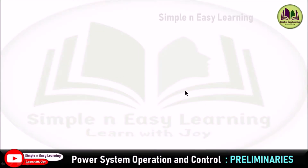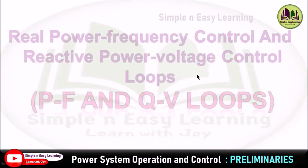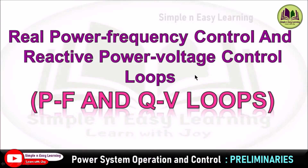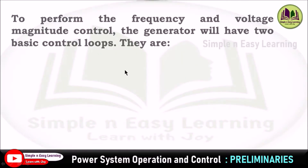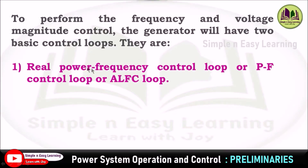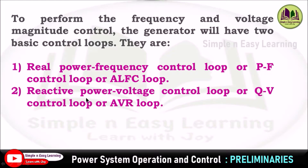Today we are going to see the preliminaries in power system operation and control — that is real power frequency control and reactive power voltage control, which we call the PF and QV loops. To perform frequency and voltage magnitude control, the generator has two basic control loops: the real power frequency control loop, or PF control loop, also called the ALFC loop (automatic load frequency control loop), and the reactive power voltage control loop, or QV control loop, also called the AVR loop (automatic voltage regulator loop).